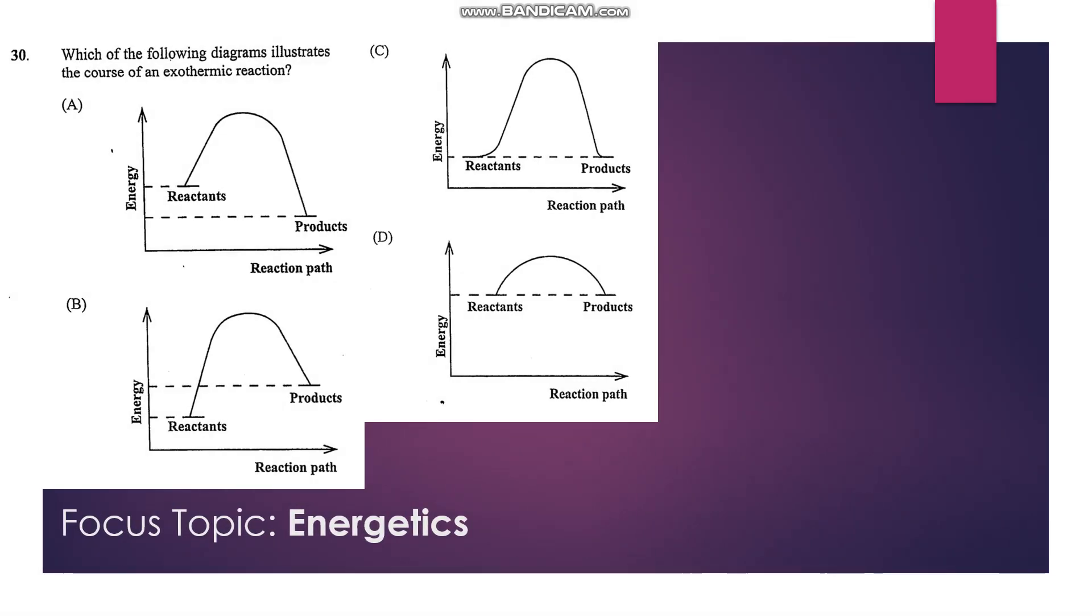Number 30: Which of the following diagrams illustrates the course of an exothermic reaction? In an exothermic reaction, heat is given out, so the energy of the products would be less than the energy of the reactants. And A describes that.